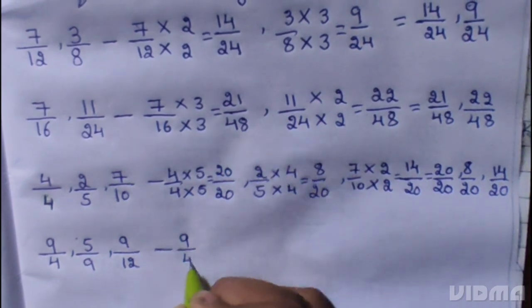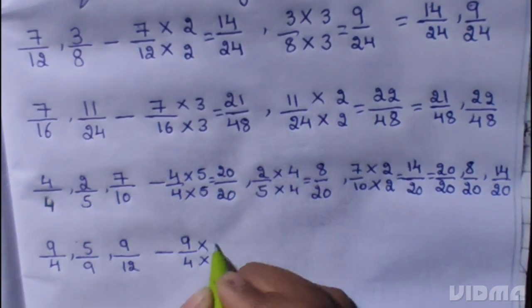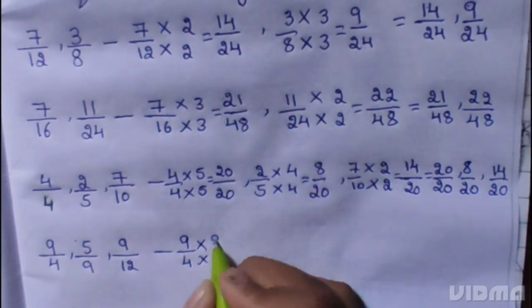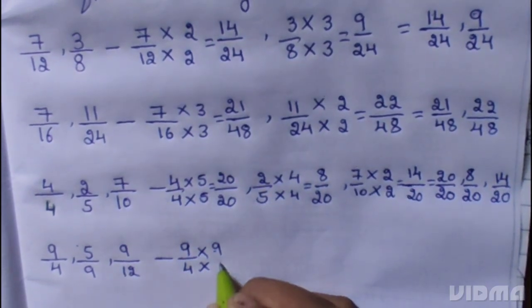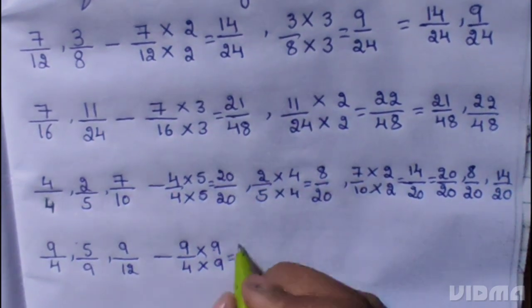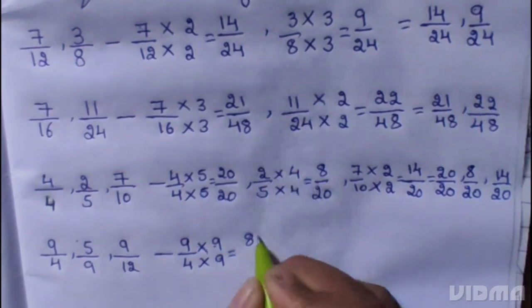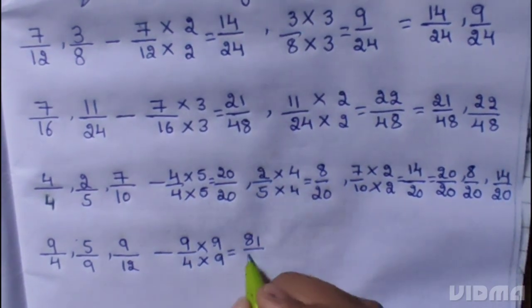9 by 4. 9 multiplied 9, 4 multiplied 9. 9 by 9 is 81, 4 by 9 is 36.